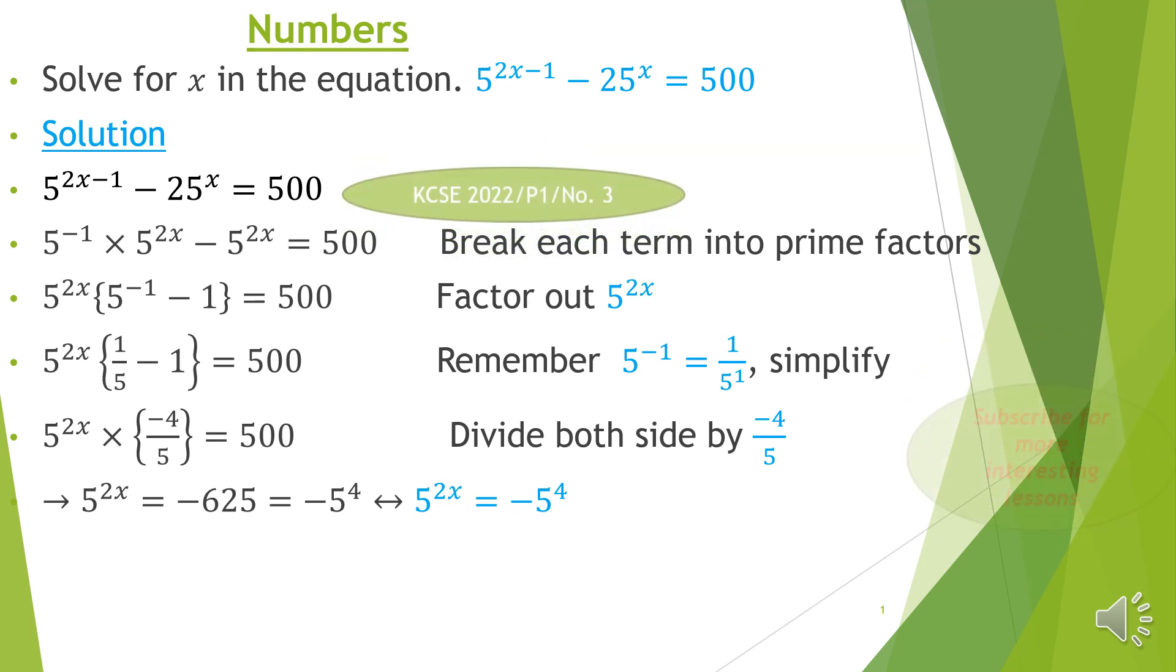5 raised to 2x equals negative 625, which is the same as negative 5 raised to 4 if you are to write as index form. This implies, therefore, that 5 raised to 2x equals negative 5 raised to 4.